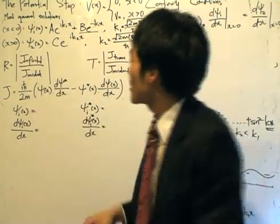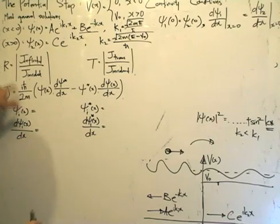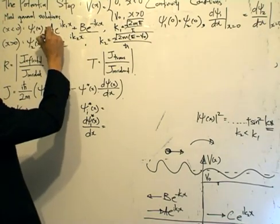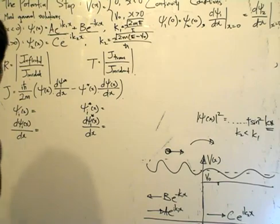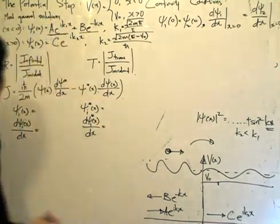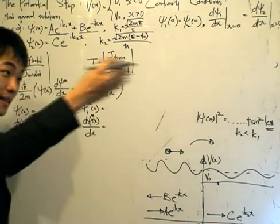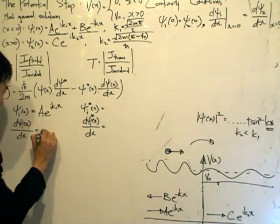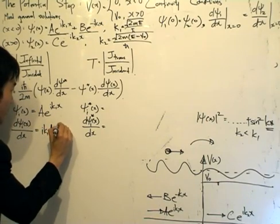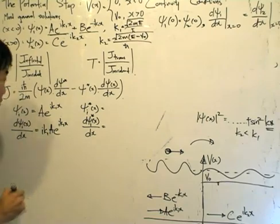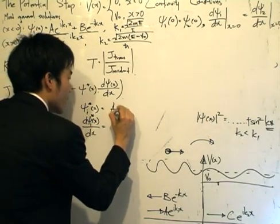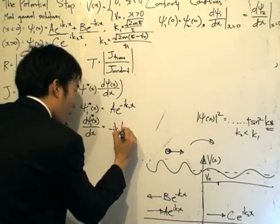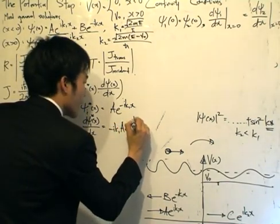These wave functions correspond to plane waves. We want to calculate the incident current density, so we use psi_i, which is A e to the ik1x. Taking the first derivative, we get ik1 A e to the ik1x. Taking the conjugate of psi_i, we get A e to the minus ik1x, and its first derivative gives ik1 A e to the minus ik1x.